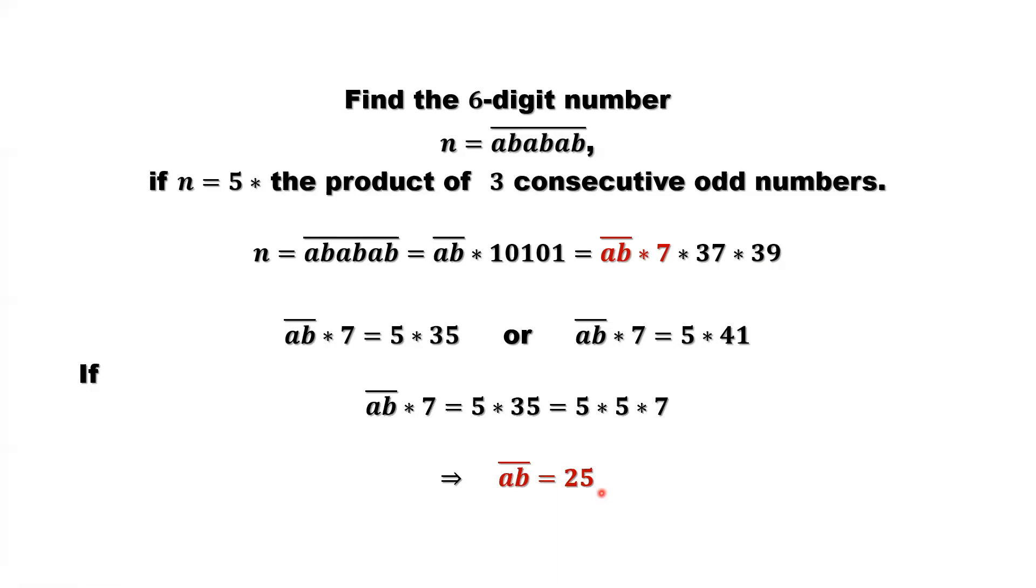What is the question? We want to find N. A equals what? ABABAB. If we know AB is 25, we know that's 252525. That's one answer.